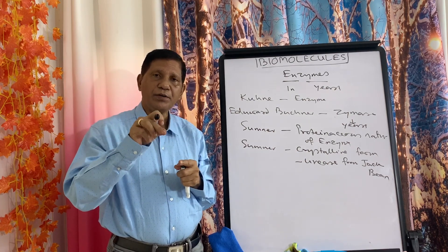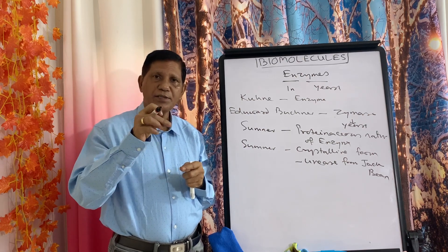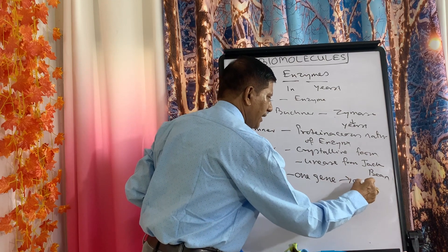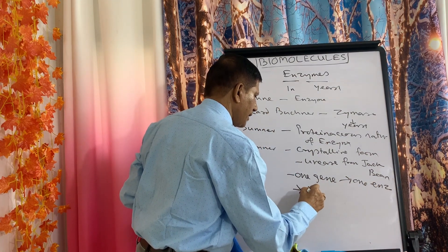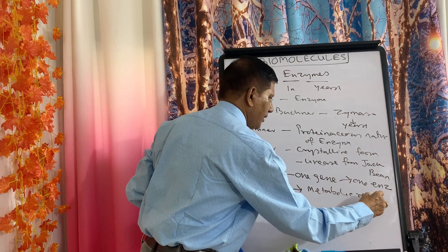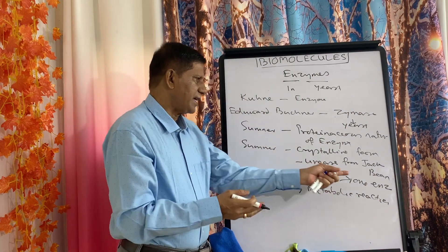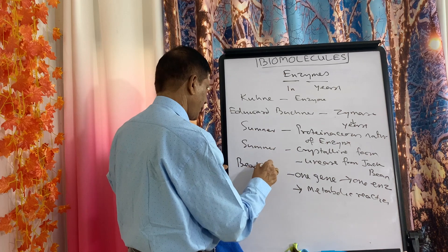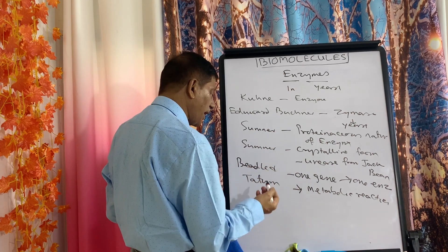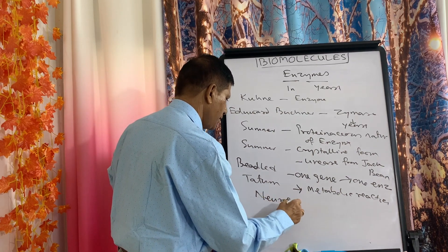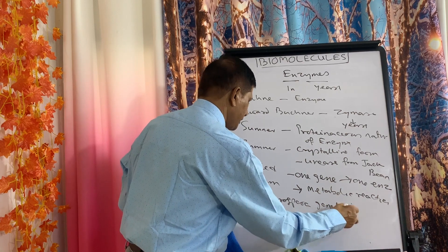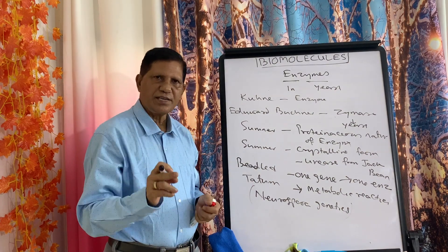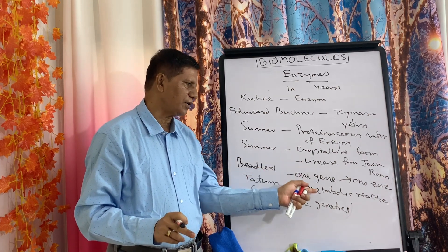Regarding how enzymes regulate a particular metabolic reaction: one gene gives rise to one enzyme, and that single enzyme catalyzes a particular metabolic reaction. This means the enzyme which controls the metabolic reaction is synthesized by a single gene. This statement — one gene, one enzyme, one metabolic reaction — was given by Beadle and Tatum when they were working on Neurospora genetics. Neurospora is a fungus, and for this work they were awarded the Nobel Prize.